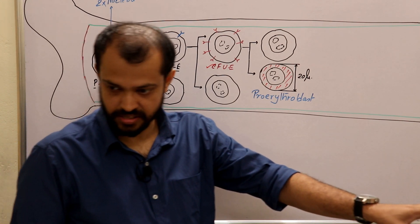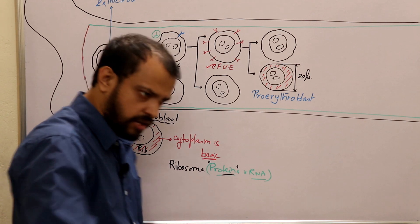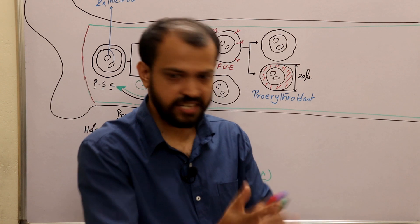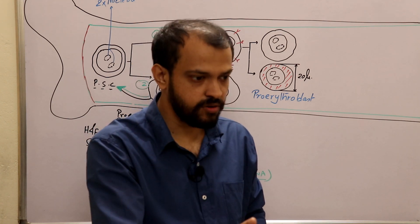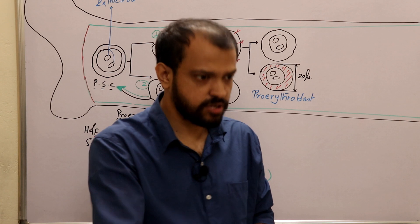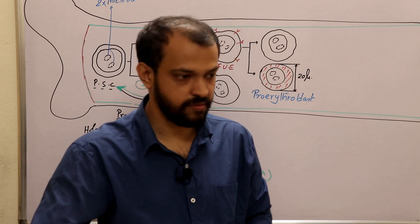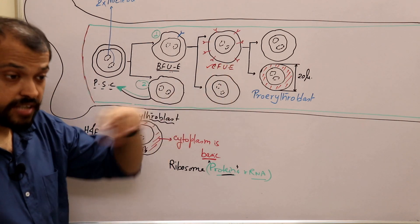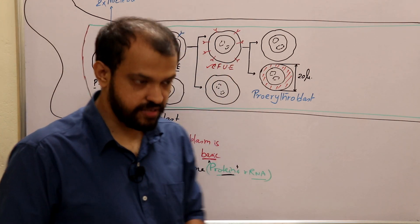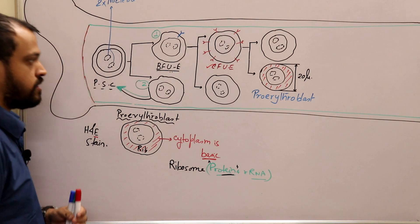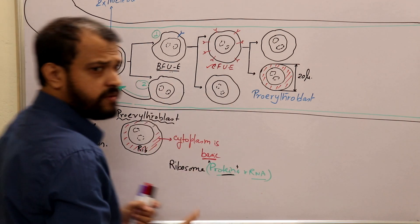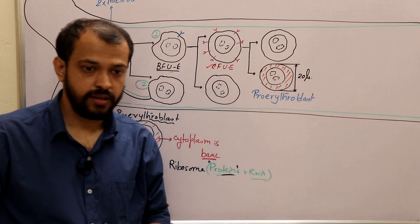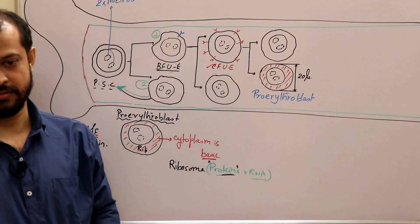The erythropoietin receptor follows the JAK-STAT pathway. Most cytokines follow the JAK-STAT pathway, and most neurotransmitters follow the G-protein receptor pathway — this is a basic thumb rule. We will now be converting proerythroblast into the next stage: early normoblast.